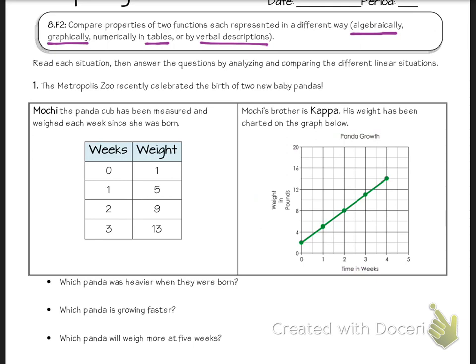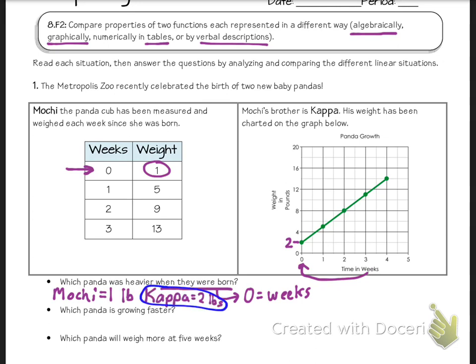Which panda was heavier when they were born? Well, when they were born means when the weeks is equal to zero. That's when they were born. So let's look at each of these. Here Mochi, when weeks is zero, her weight was one. And when Kappa was born, the time in weeks is zero. That right there is at two because it's halfway between zero and four. So Mochi was one pound, Kappa was two pounds, so Kappa was the heavier panda. You see how I wrote down my work below? I need you guys to do that for each problem like this.